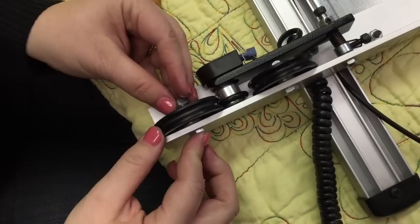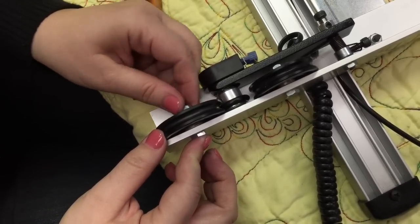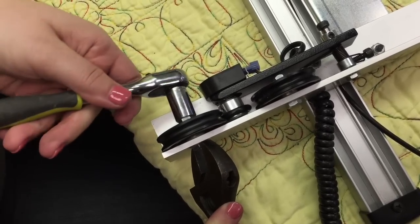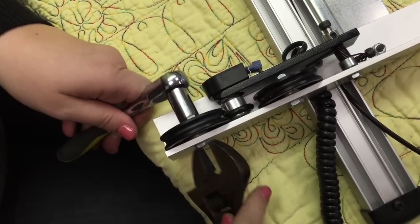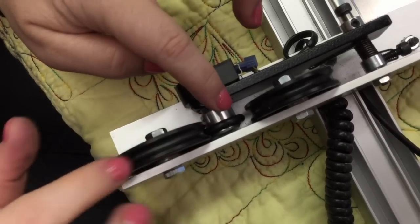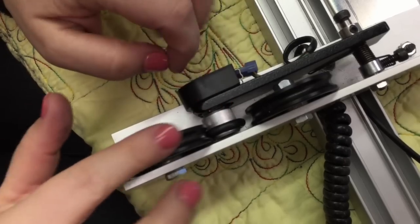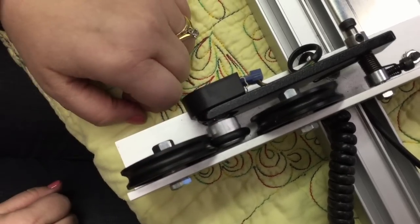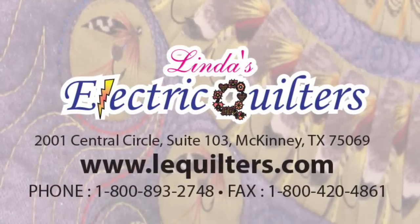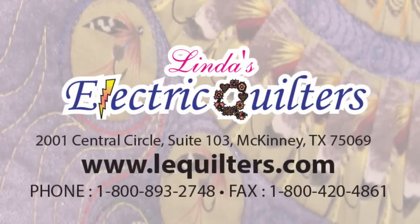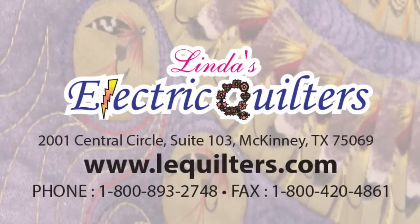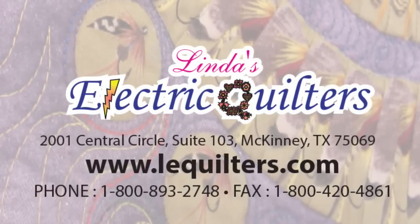Put our screw back in, put the nut back on, tighten it back up, rotate the wheel and make sure that the encoder O-ring is rotating. There you go, you've just replaced it.